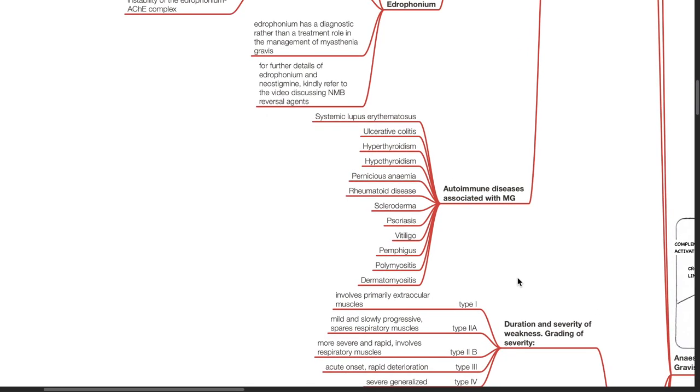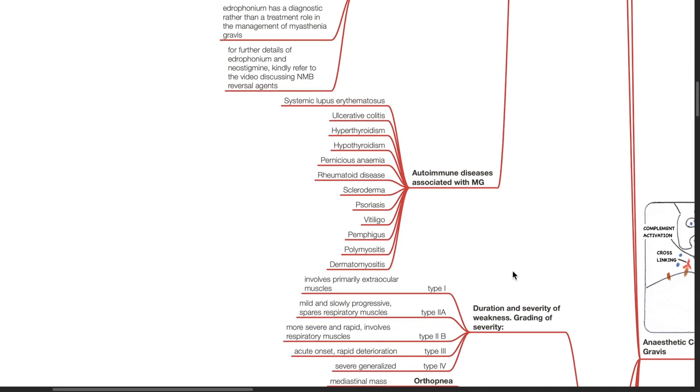Autoimmune diseases associated with myasthenia gravis include systemic lupus erythematosus, ulcerative colitis, hyperthyroidism, hypothyroidism, pernicious anemia, rheumatoid disease, scleroderma, psoriasis, vitiligo, pemphigus, polymyositis, and dermatomyositis.